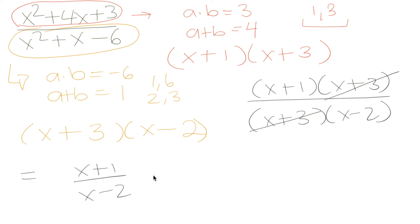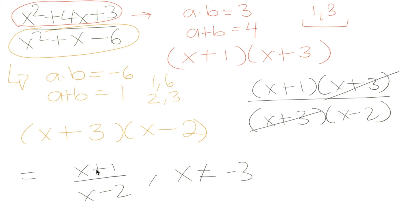We need to add a condition: x cannot be equal to negative 3. That is because in the original expression, when x equals negative 3, the factor x plus 3 in the denominator becomes 0, making the whole fraction undefined. The simplified expression x plus 1 over x minus 2 is not undefined at negative 3 — it's only undefined at 2. So to make these two expressions equivalent, we need both conditions: x cannot equal negative 3, and x also cannot equal 2, since 2 minus 2 equals 0 which would also make the expression undefined.